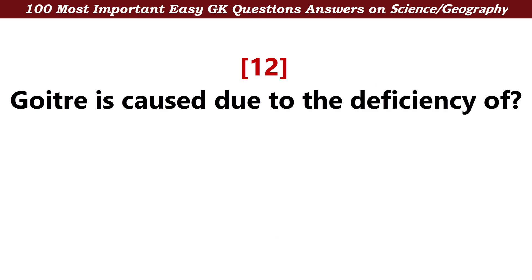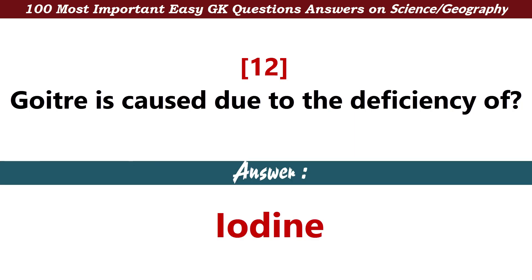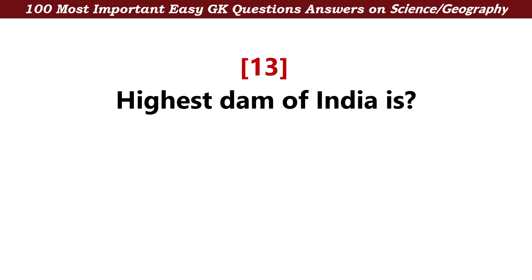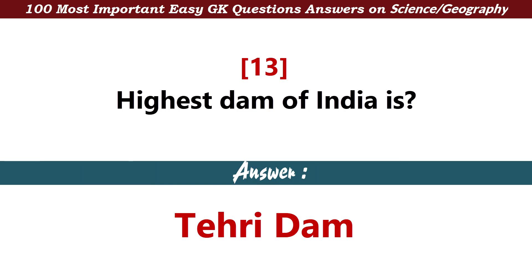Goitre is caused due to the deficiency of — Answer: Iodine. Highest dam of India is — Answer: Tehri Dam.